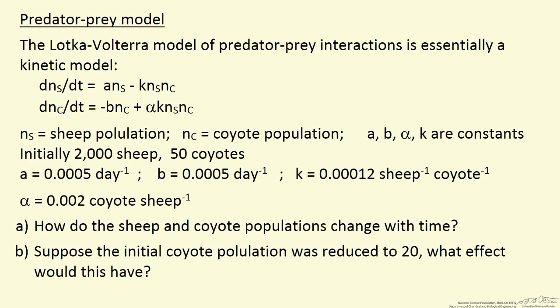Here we're going to look at a simplified model of predator-prey interactions. The idea being we have so many sheep, so many coyotes, and of course the coyotes eat the sheep.